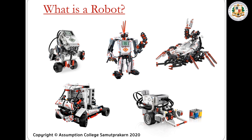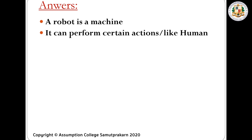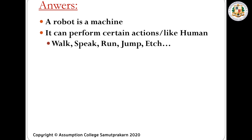First, what is a robot? As you can see here, we have a lot of different kinds of robots that we can create. A robot is a machine — always remember that. It can perform certain actions like a human; it can move like a human, it can imitate the movement of a human. Some robots can walk, speak, run, jump, etc.